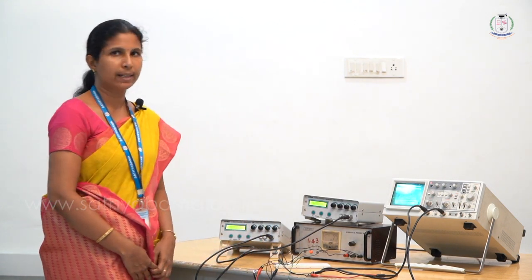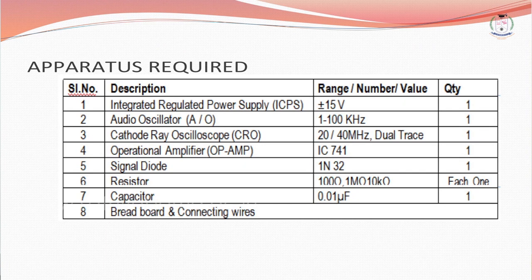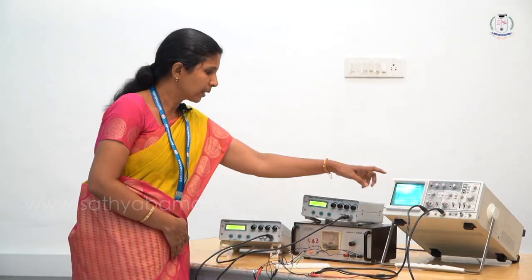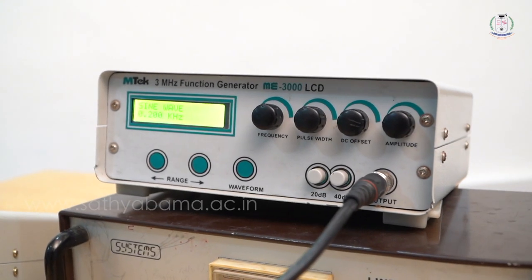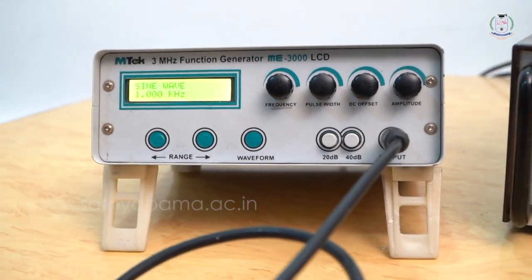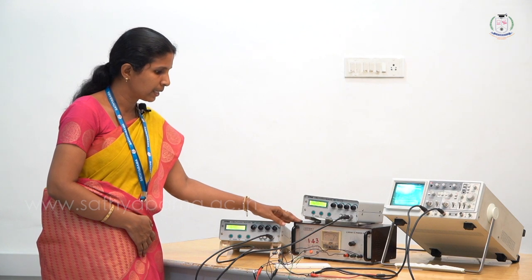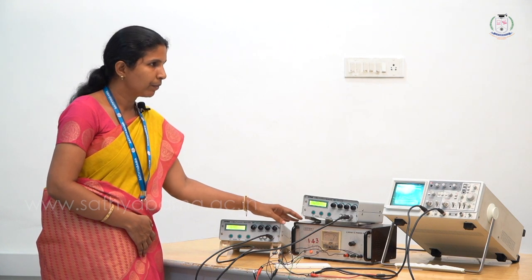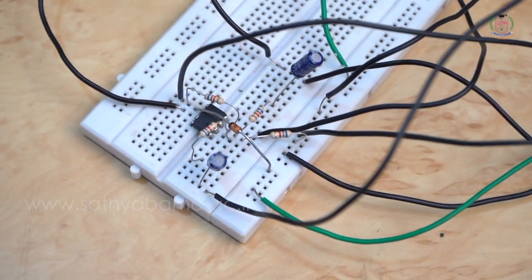That performance we are going to verify practically. The components required for the verification of sampling theorem are a CRO, two audio oscillators — one for the message signal and the second one for the carrier signal — and a linear IC power supply. We are going to verify the sampling theorem by using IC741.